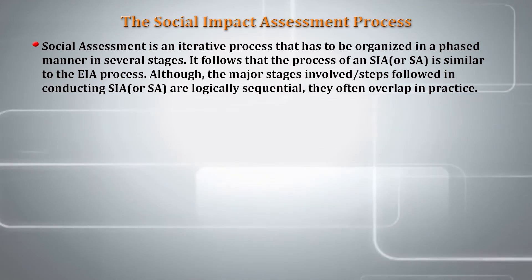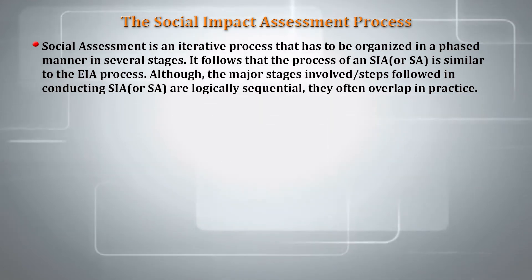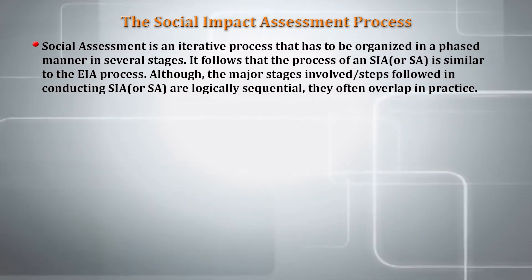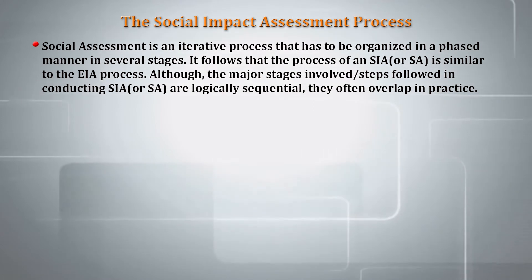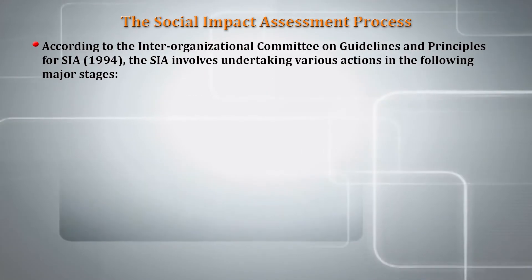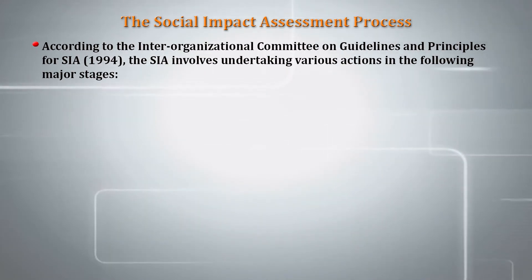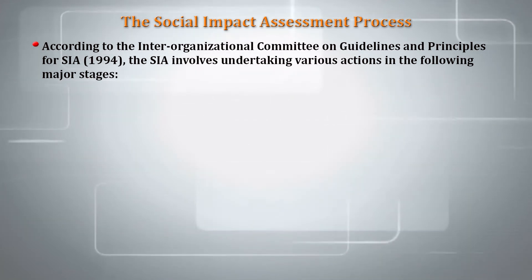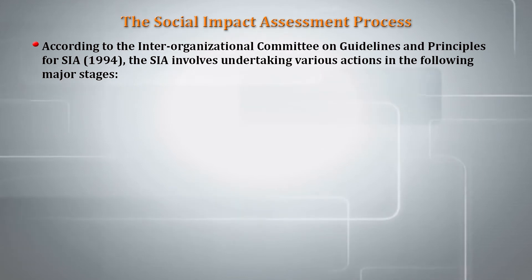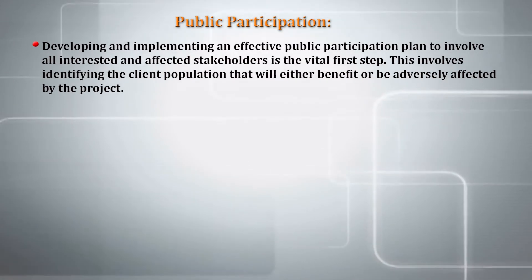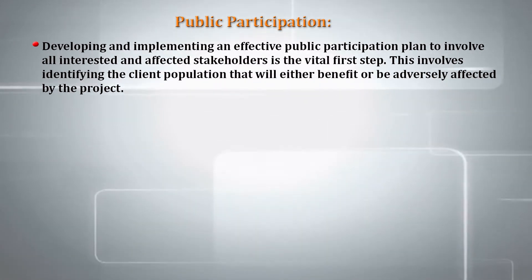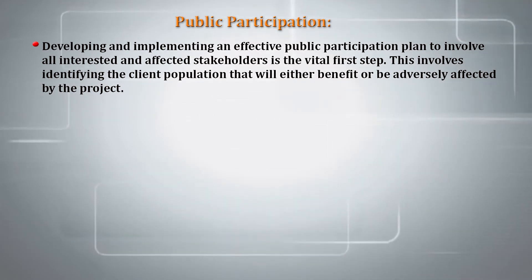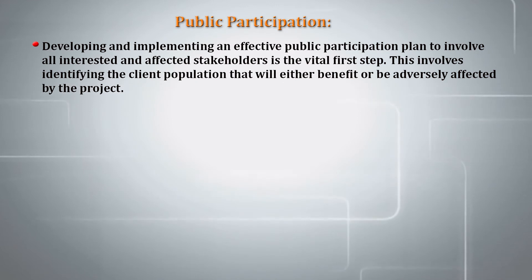Social assessment is an iterative process that has to be organized in a phased manner in several stages, following a process similar to the EIA process. Although the major steps are logically sequential, they sometimes overlap in practice. According to the Inter-Organisational Committee on Guidelines and Principles for SIA, the SIA involves undertaking various actions in the following major stages. The first is public participation — developing and implementing an effective public participation strategy to involve all those who are interested and affected stakeholders.